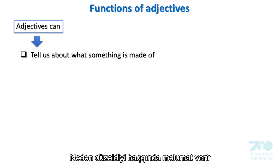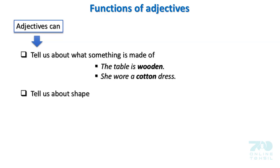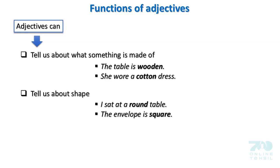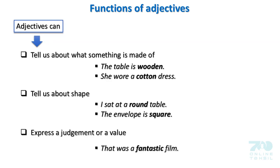Adjectives can tell us what something is made of. Examples: The table is wooden. She wore a cotton dress. Tell us about shape. Examples: I sat at a round table. The envelope is square. Adjectives can also express a judgment or a value. Examples: That was a fantastic film. Grammar is complicated.